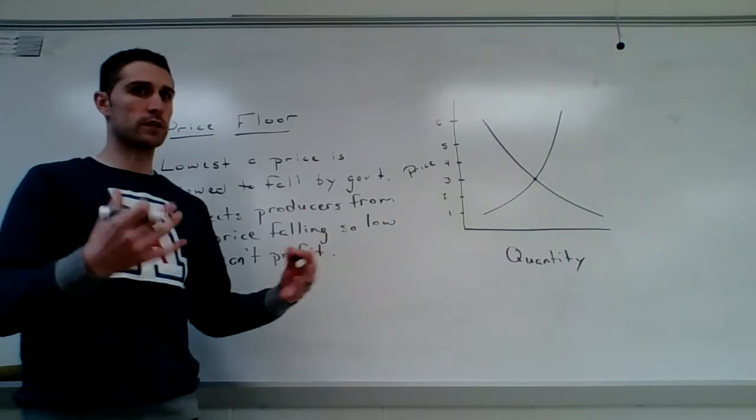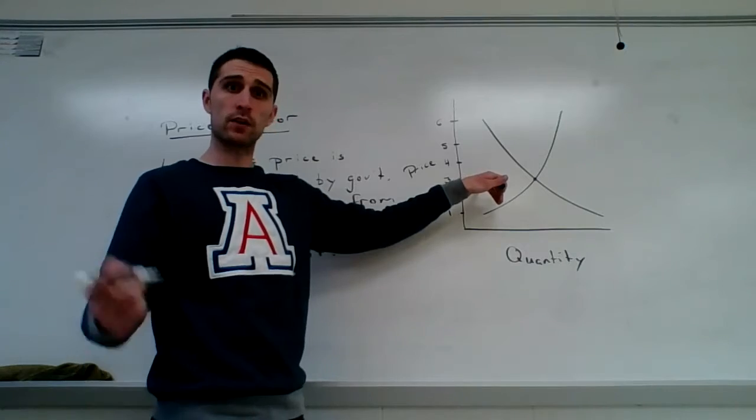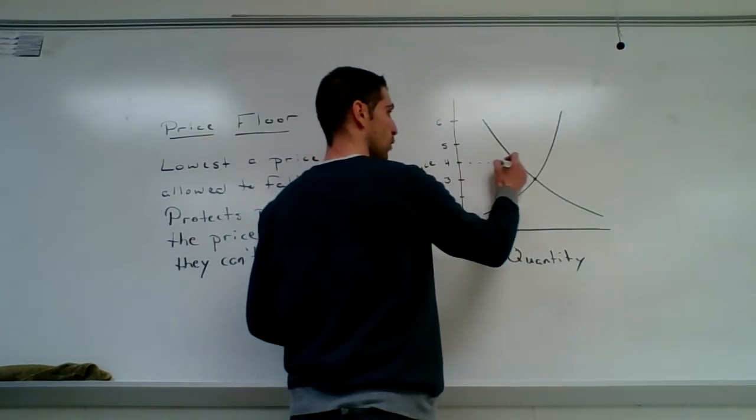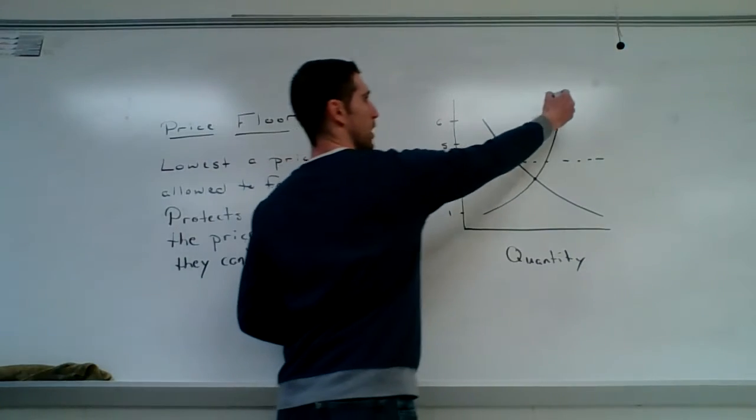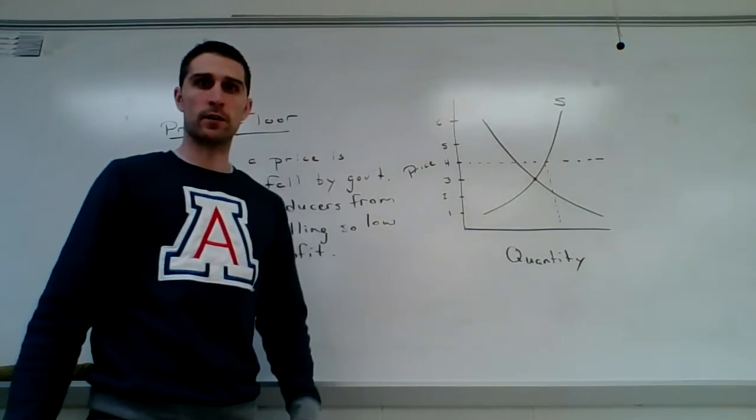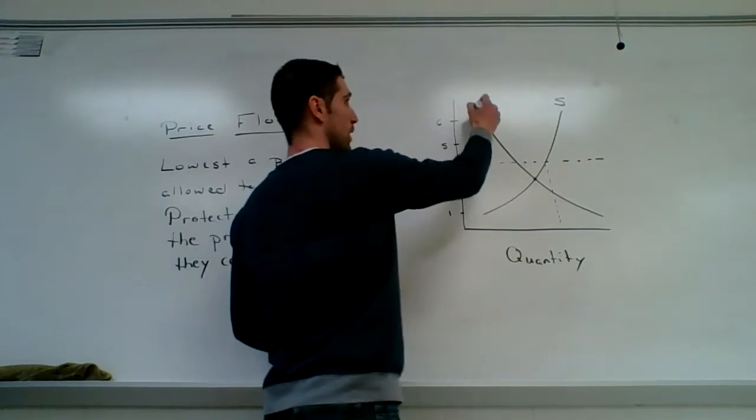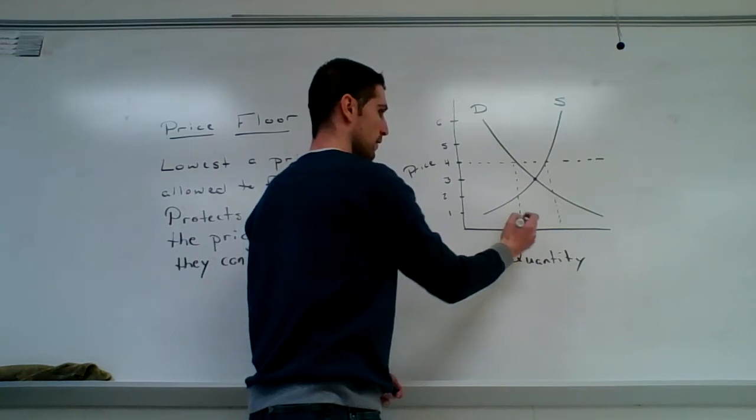So, again, just like with the price ceiling, note what happens. If the price equilibrium here is originally $3 and we set the price floor at $4, we end up with a quantity supplied that is way over here and we end up with a quantity demanded that is back here.